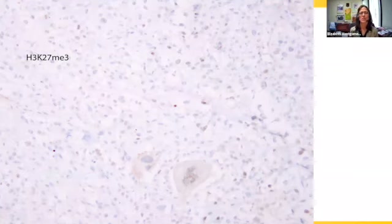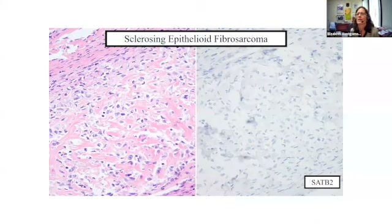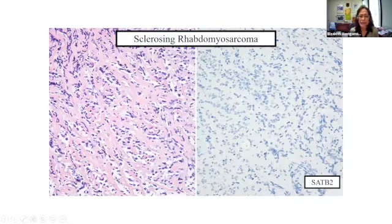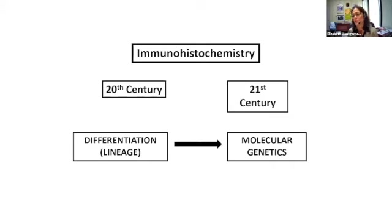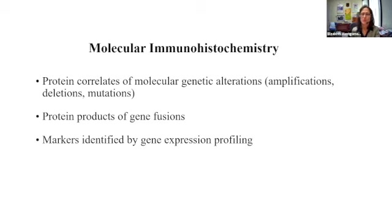SATB2 really shines in distinguishing sclerosing epithelial fibrosarcoma from osteosarcoma — the negative SATB2 helps you. Similarly, a sclerosing rhabdomyosarcoma could be confused with osteosarcoma, and again the negative SATB2 is a helper. With immunohistochemistry you could say there's a 20th century approach all about lineage, and nowadays we can actually exploit immunohistochemistry to look for molecular markers — immunolabeling of protein products of gene fusions or markers identified by gene expression profiling.